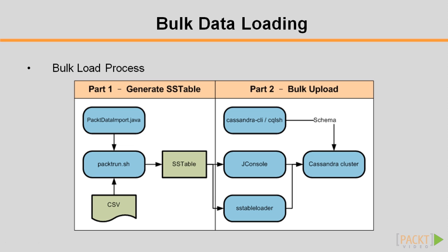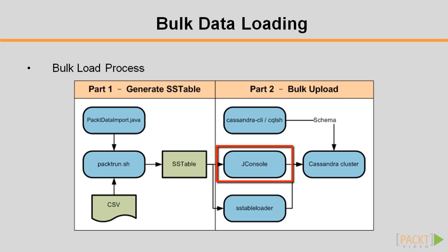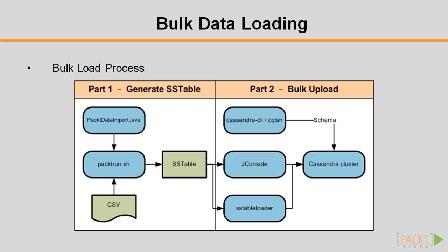Let's have an overview of the bulk load process and work backwards from Part 2 on the diagram. Cassandra provides a tool called SSTable Loader that can stream SSTable data files into a running cluster, conforming to the replication strategy. Alternatively, one may use a provided JMX MBean to achieve the same bulk load purpose. Since SSTable is for data only, the schema of the target table must be defined in the cluster through Cassandra CLI or CQLSH. However, both SSTable Loader and JMX MBean only accept SSTable as their input.